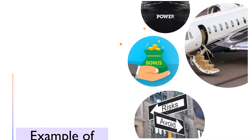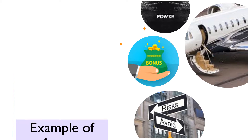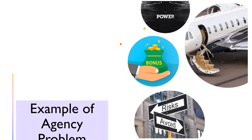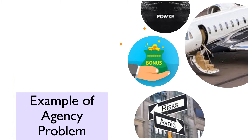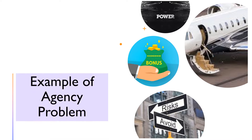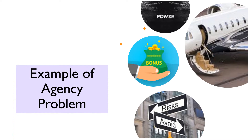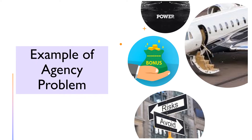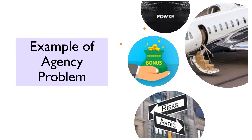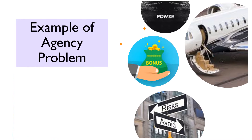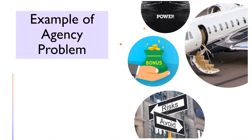Let's look into some examples of agency problems. Managers may be tempted to buy sumptuous corporate jets or to schedule business meetings at tony resorts. Financial managers may be reluctant or unwilling to take more than moderate risks if they perceive that taking too much risk might jeopardize their job and reduce their personal wealth. Managers may work just to maximize their own bonus and focus on short-term performance measures. Left to themselves, managers would tend to maximize the amount of resources over which they have control, or more generally, corporate power or wealth.